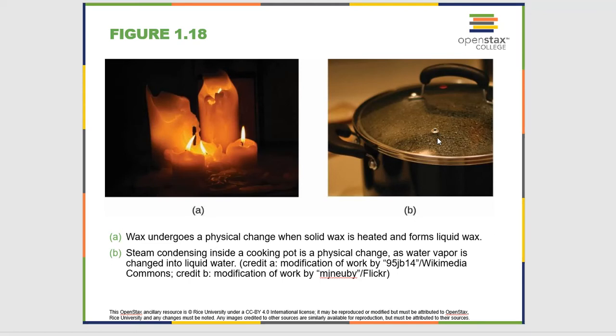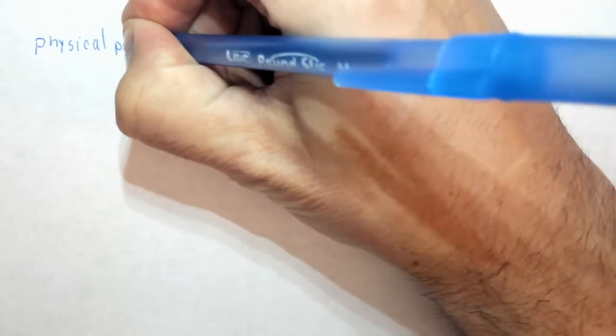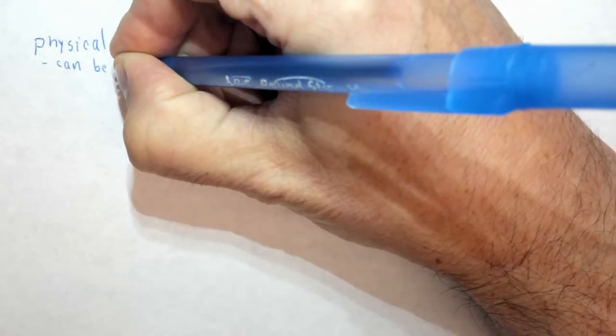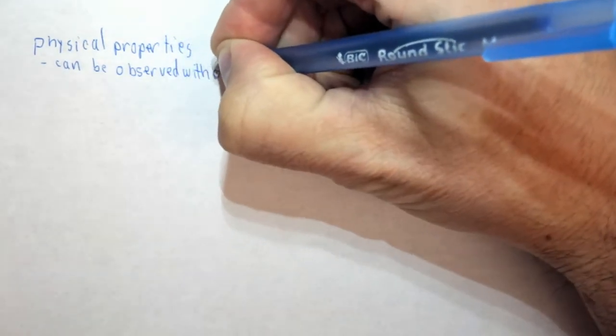These are some physical properties. We could also note some other physical properties. It's clear, that would be a physical property. For this metal that you can see on the rim of the pot, a physical property might be that it's shiny. Or for this handle made of plastic, a physical property would be that it's black. In all cases we don't have to do any chemistry to observe these physical properties. So physical properties can be observed without a chemical reaction.